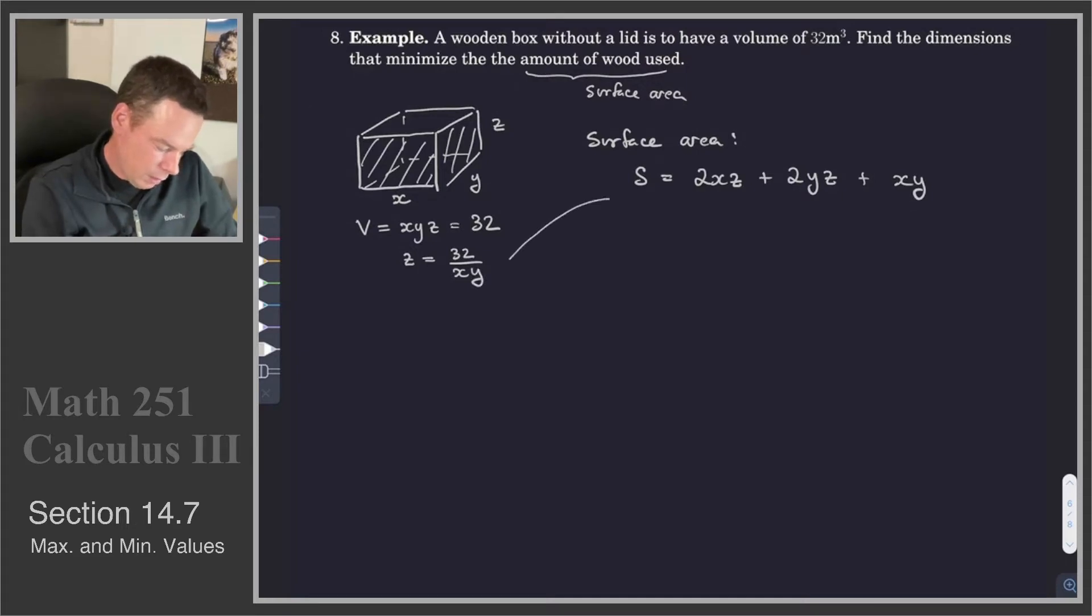So if we take that and plug it into our expression for S, we really get that the surface area function is a function of x and y. We can replace z with 32 over xy, so this becomes 64 over y plus 64 over x plus xy. So that's the function we're interested in.